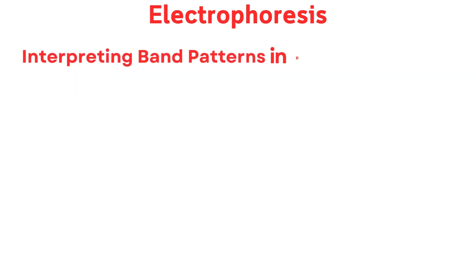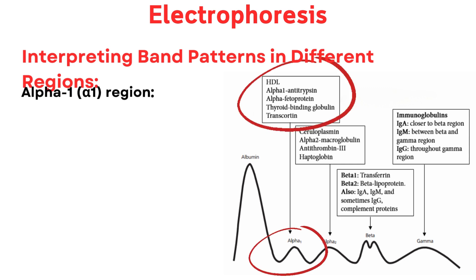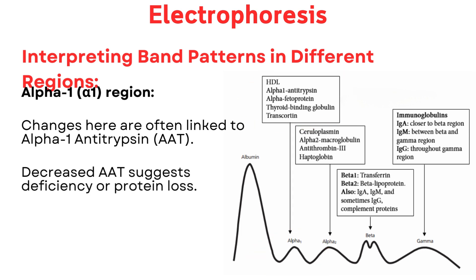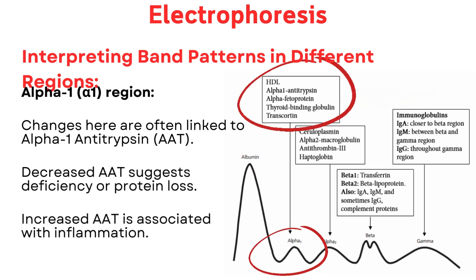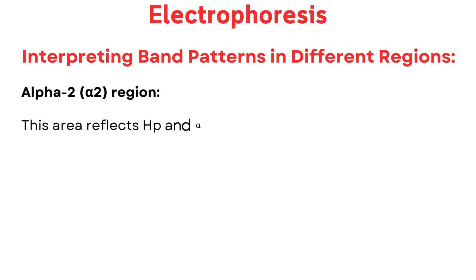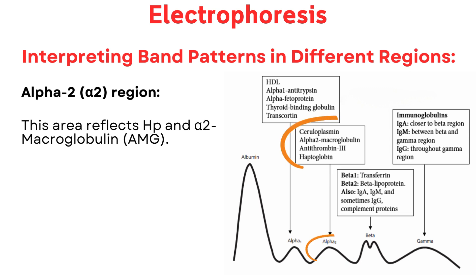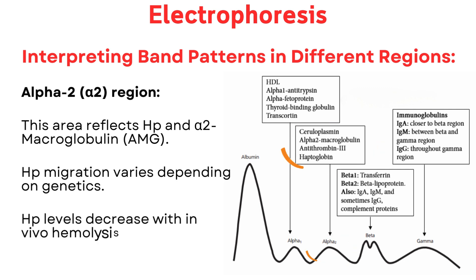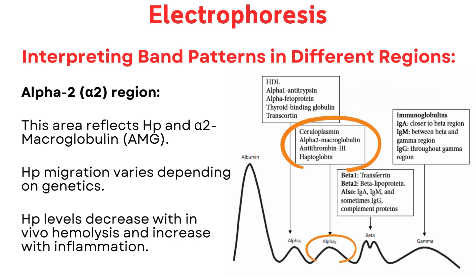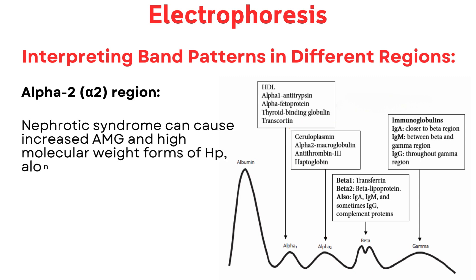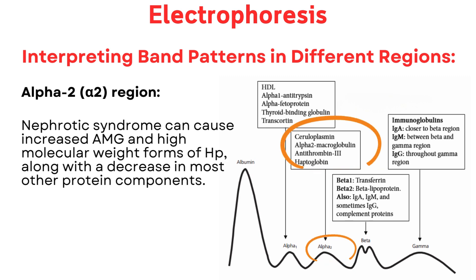Interpreting band patterns in different regions. Alpha-1 region: changes here are often linked to alpha-1 antitrypsin (AAT). Decreased AAT suggests deficiency or protein loss; increased AAT is associated with inflammation. Alpha-2 region: this area reflects haptoglobin (HP) and alpha-2 macroglobulin (AMG). HP migration varies depending on genetics; HP levels decrease with in vivo hemolysis and increase with inflammation. Nephrotic syndrome can cause increased AMG and high molecular weight forms of HP, along with a decrease in most other protein components.